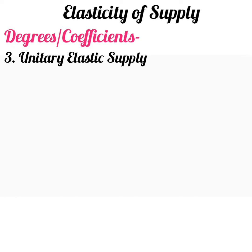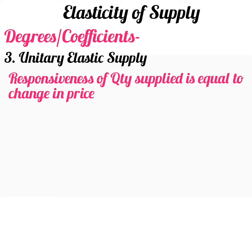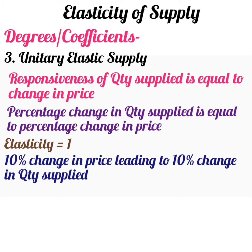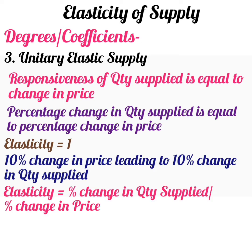Unitary elastic supply. If the responsiveness of the quantity supplied is equal to the change in price of the commodity, then elasticity of supply is said to be unitary elastic. It is a situation where percentage change in quantity supplied is equal to percentage change in price. Hence the elasticity of supply is equal to 1. Suppose a 10% change in price of a product leads to a 10% change in quantity supplied. Elasticity = 10% divided by 10% = 1.